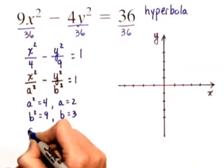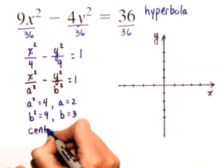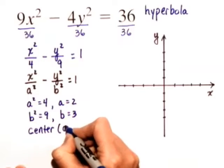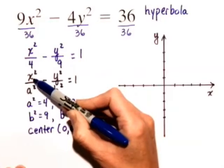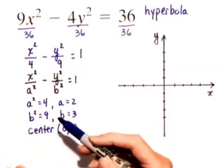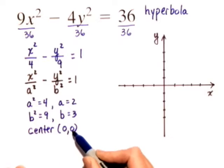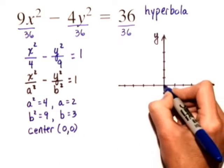We can also see that the center is located at 0, 0, because we don't have x plus or minus some quantity squared, or y plus or minus some quantity squared. So let's start first with this information. Let's put the center.